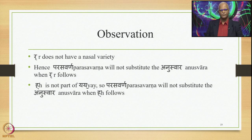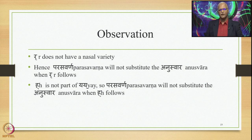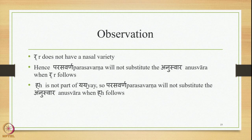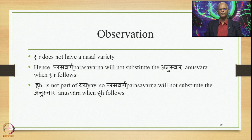In summary, Rra does not have a nasal variety, so Parasavarana will not substitute the Anuswara when Rra follows. This is clearly stated in the Vyakarana Mahabhasya and in later Paninian grammatical tradition. Rra is also not part of Yai, so Parasavarana will not substitute the Anuswara when Rra follows. In this lecture we studied examples where Ma comes at the end of a pada. Examples where Ma comes at the end of an internal pada, and Ma and Na coming between padas, will be studied in the coming lecture.